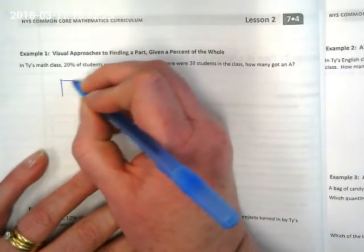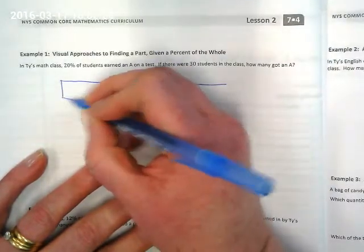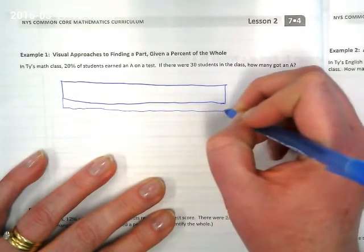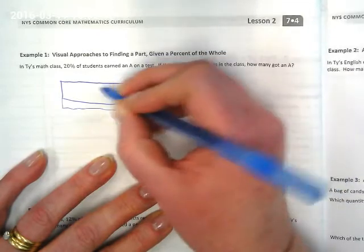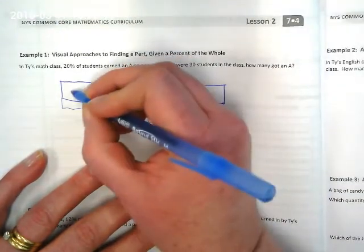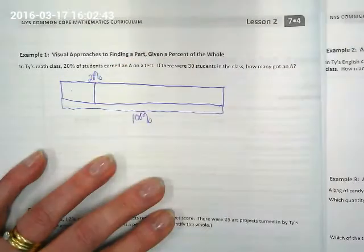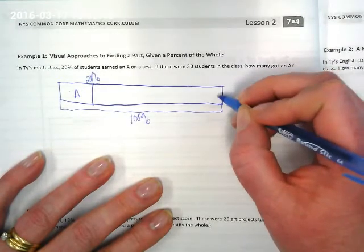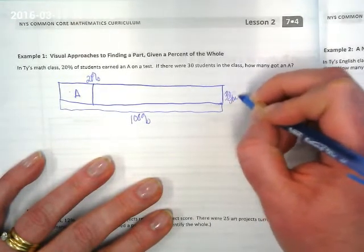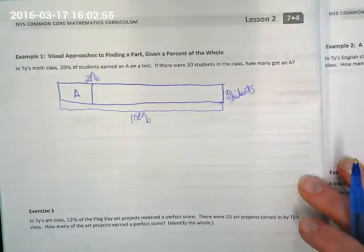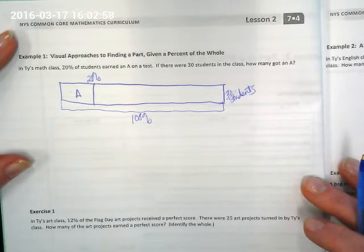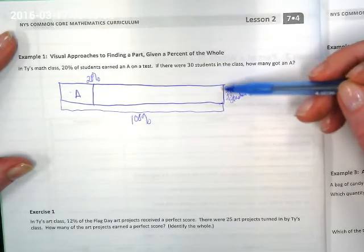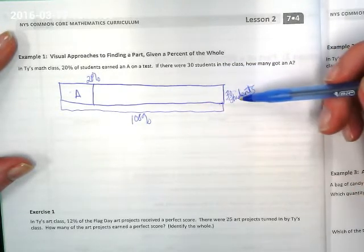One way we could do a visual is using a tape or bar model. And if this whole thing is 100%, this section here would be the 20%. And these are the students who got an A. That means that this total down here shows that the whole class is 30 students. We could use this in visualizing this broken up into 100 and try to determine what the proportionality is between 100% and 30 students being the total.